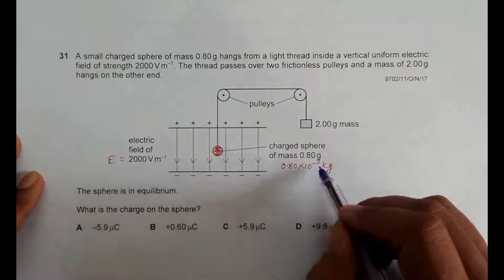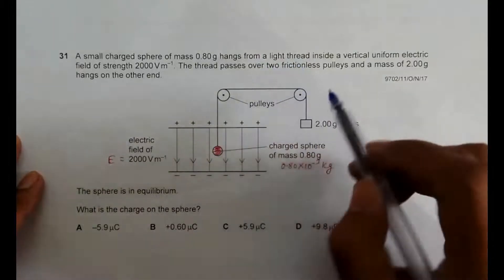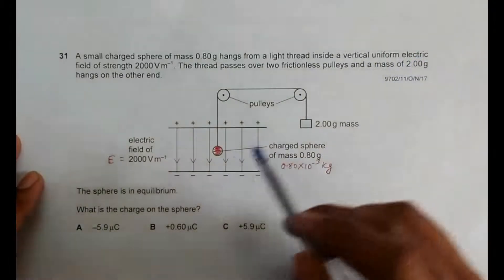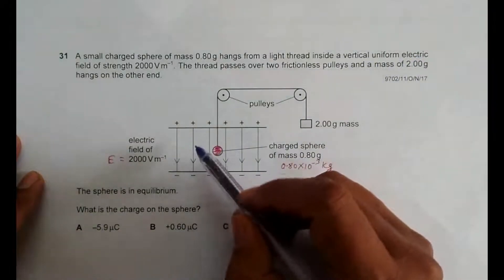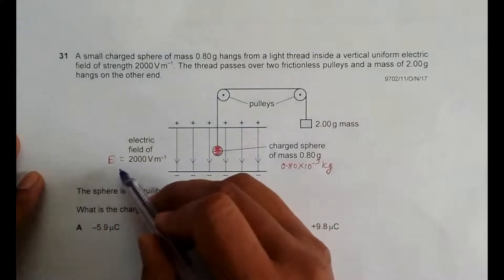It hangs from a light thread inside a vertical uniform electric field of strength 2000 volts per meter. So here we have the electric field and its strength is equal to 2000 volts per meter.